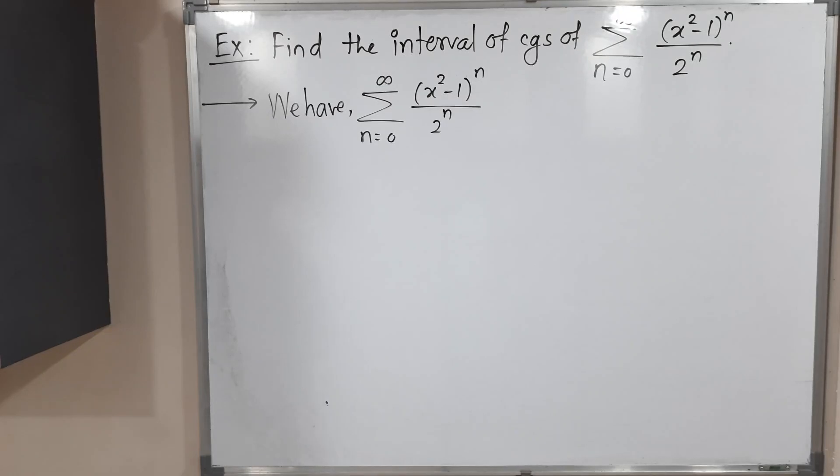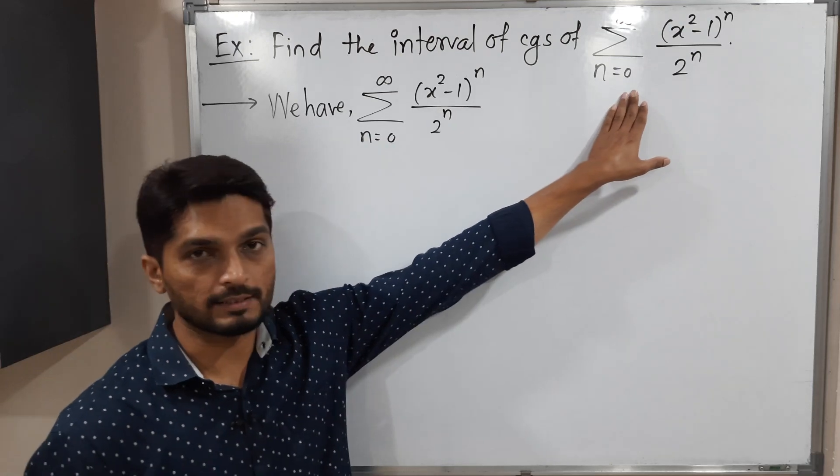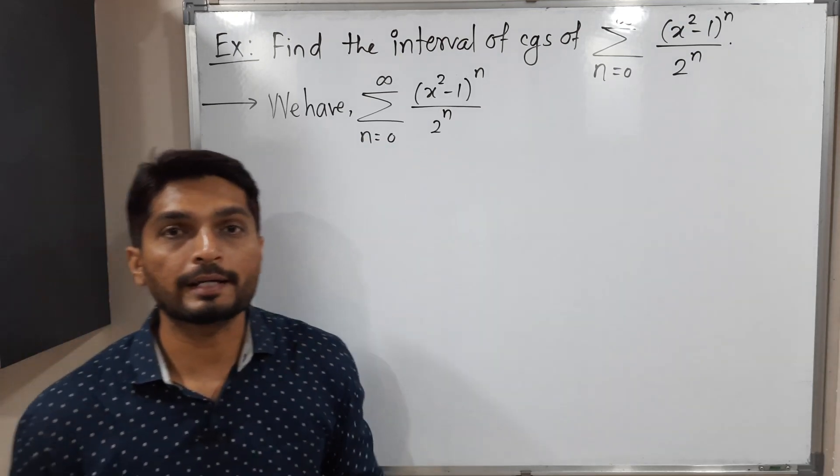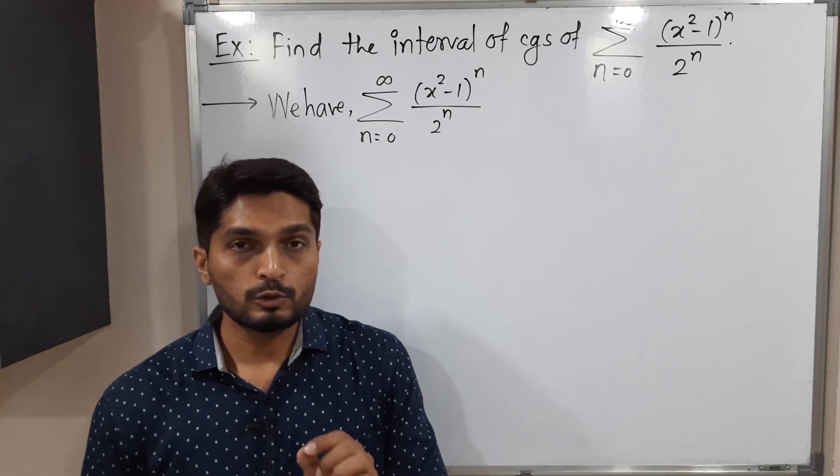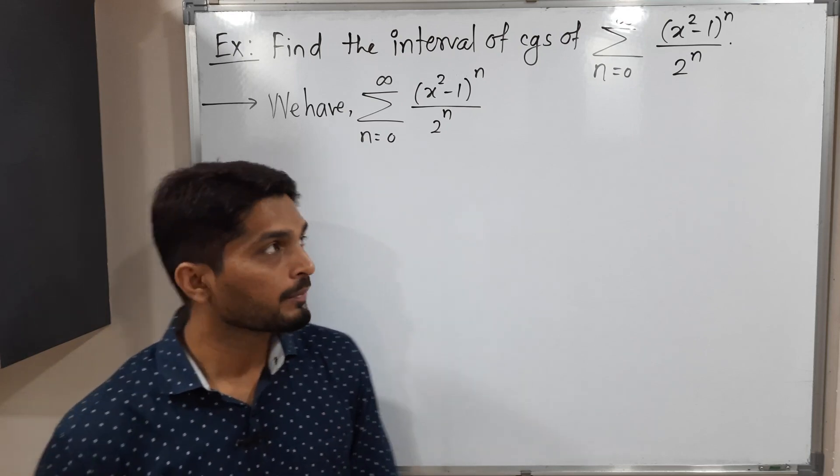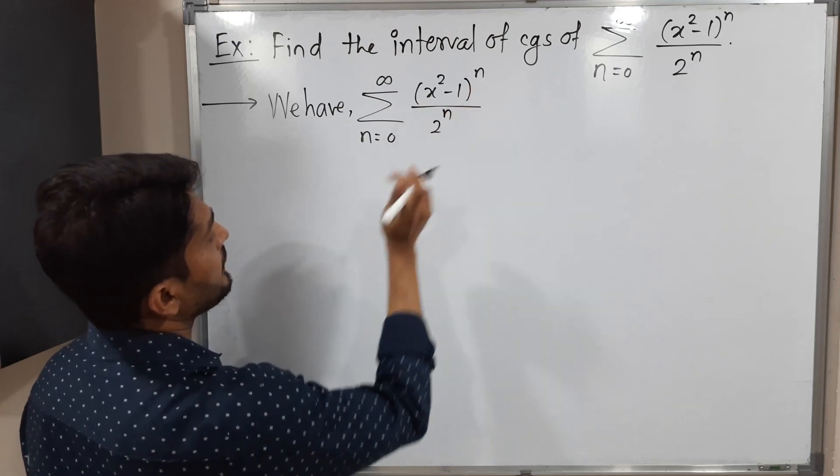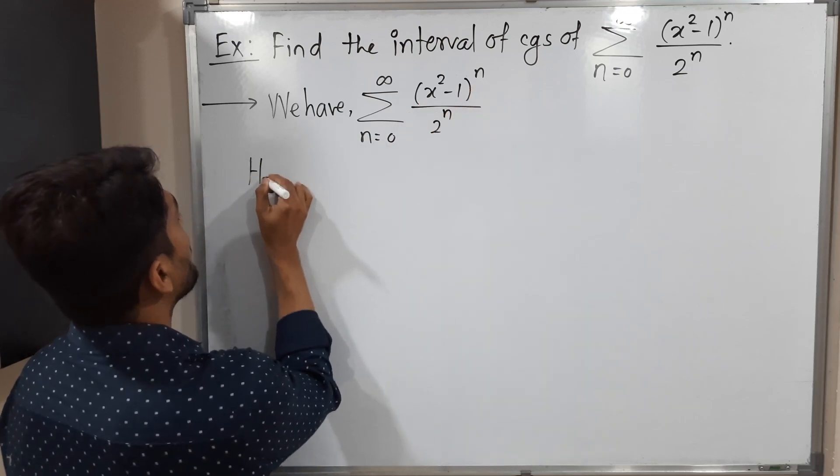Hi everyone, in this video we are going to discuss this example. We have this power series, and we have to find its interval of convergence. Let us write cn first. cn means coefficient, that means the multiple of this bracket is 1/2ⁿ, so that is our cn: 1/2ⁿ.